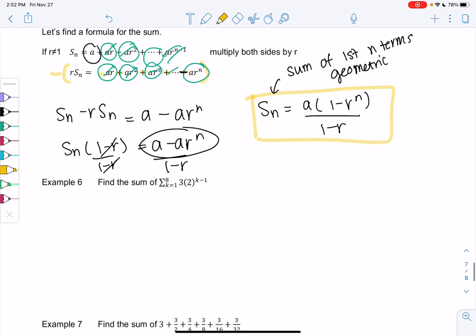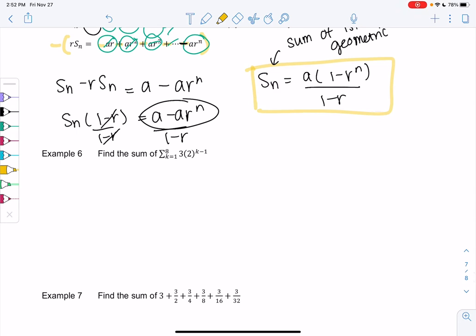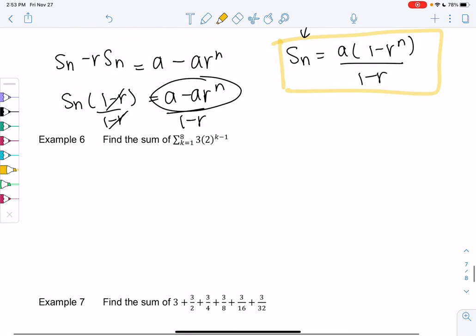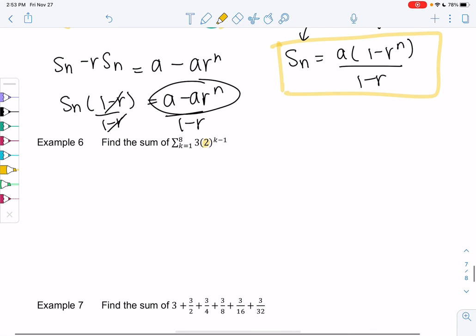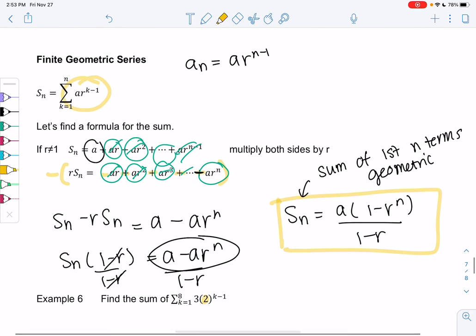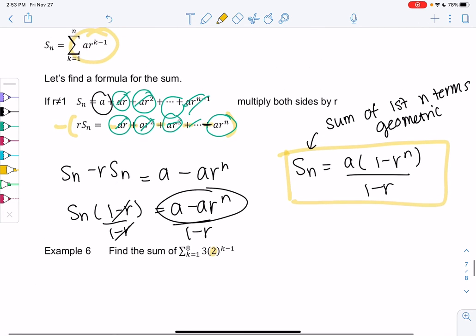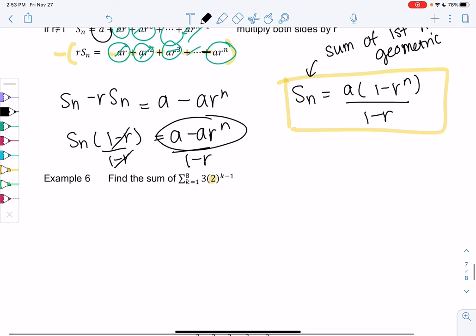Let's try two examples. Make sure it's geometric before you use this formula. Example 6 is geometric because we have 3 times 2 to the k minus 1. So we have a common ratio of r, and our a is 3. So a equals 3 and r equals 2.